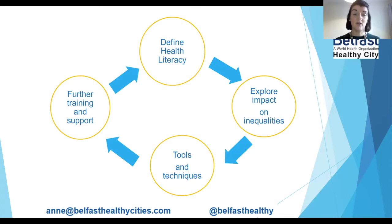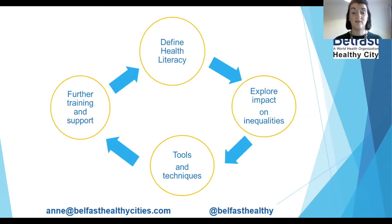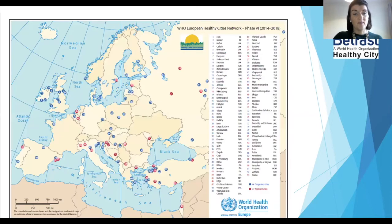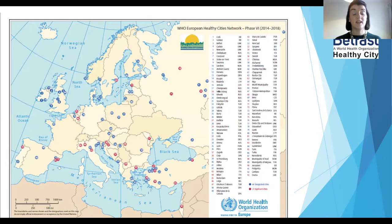Further training and information is available — this is health literacy month during October, so there are a number of seminars and training events happening mostly online. The UK Health Literacy Group are holding a number of lunchtime seminars every Thursday in October, and recordings are available or you can join live. Belfast Healthy Cities is a member of the WHO European Healthy Cities Network, and during phase six health literacy was one of the core themes.